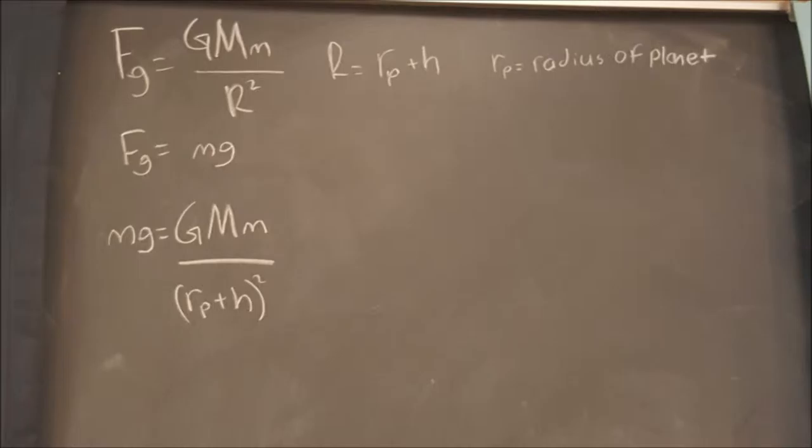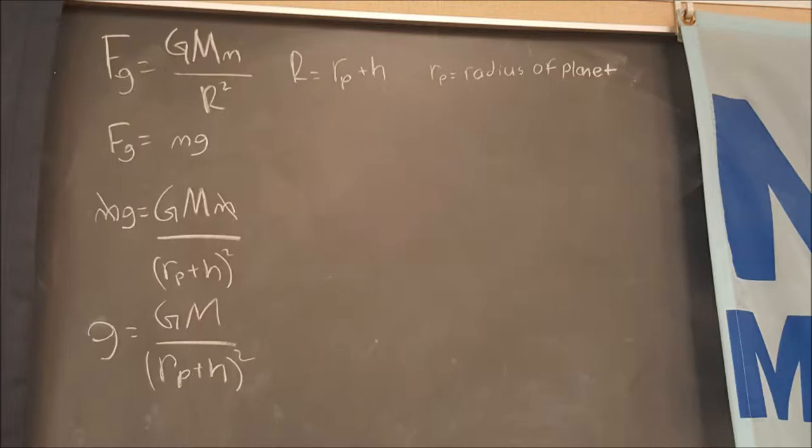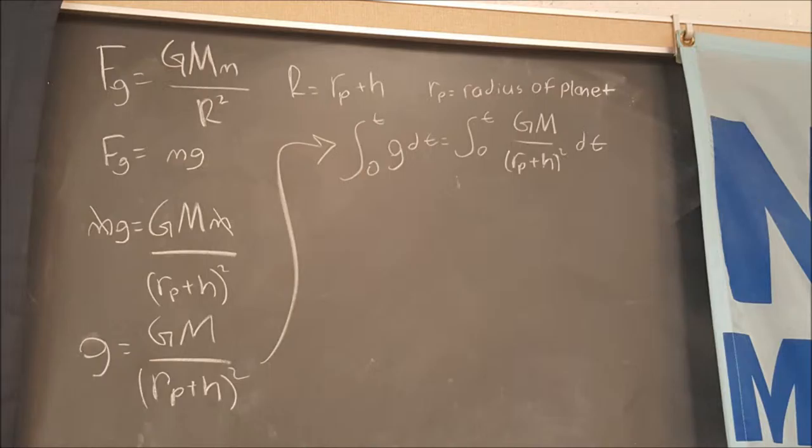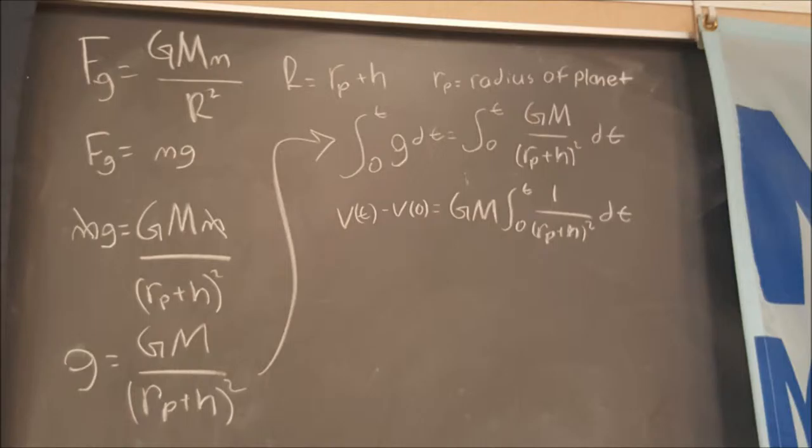So in here you can look at our constants and how we get some substitution. The force of gravity is equal to mass times the acceleration due to gravity. So we can take these two equations equal to each other and then we can cancel the little m's. So then we get this equation here. The acceleration of gravity is due to GM over Rp plus H squared.